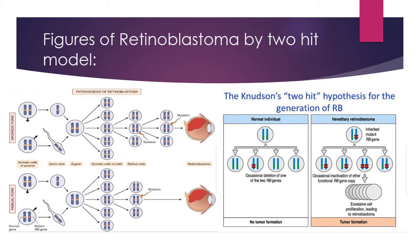In the sporadic form, mutation occurs and mutant RB genes are present; two alleles must be mutated, meaning two RB genes are mutated. In the familial form, the mutation comes from a parent; the F1 generation is a carrier, and in the F2 generation another mutation can happen, and the affected child with retinoblastoma appears. This is Knudson's two-hit hypothesis for generation of retinoblastoma.